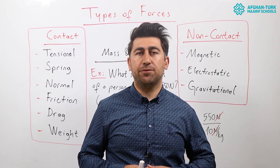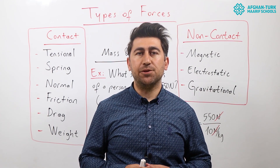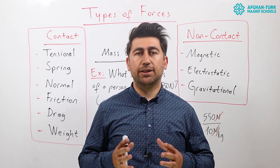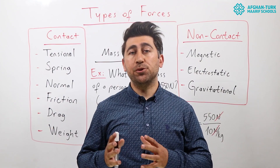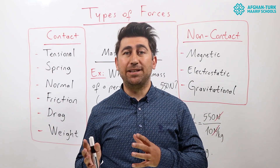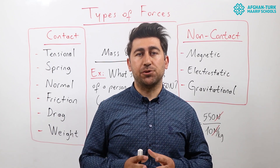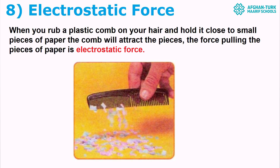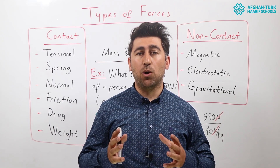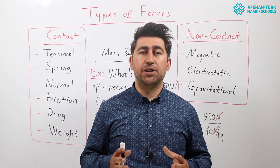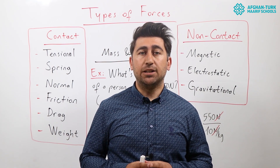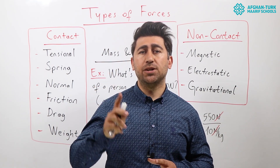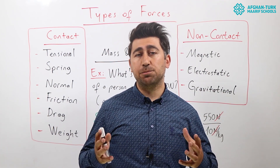Let's continue with non-contact forces. Non-contact forces can be classified into three types. Magnetic force, which occurs due to the magnetic properties of two bodies, such as opposite poles of two magnets being attracted to each other. Electrostatic force, which is due to electrical charges present in two bodies, just like in the comb and piece of paper experiment. Gravitational force — every object in the universe pulls other objects, and this is called gravitational force. Gravitational force depends on two things: the masses of the objects and the distance between them.